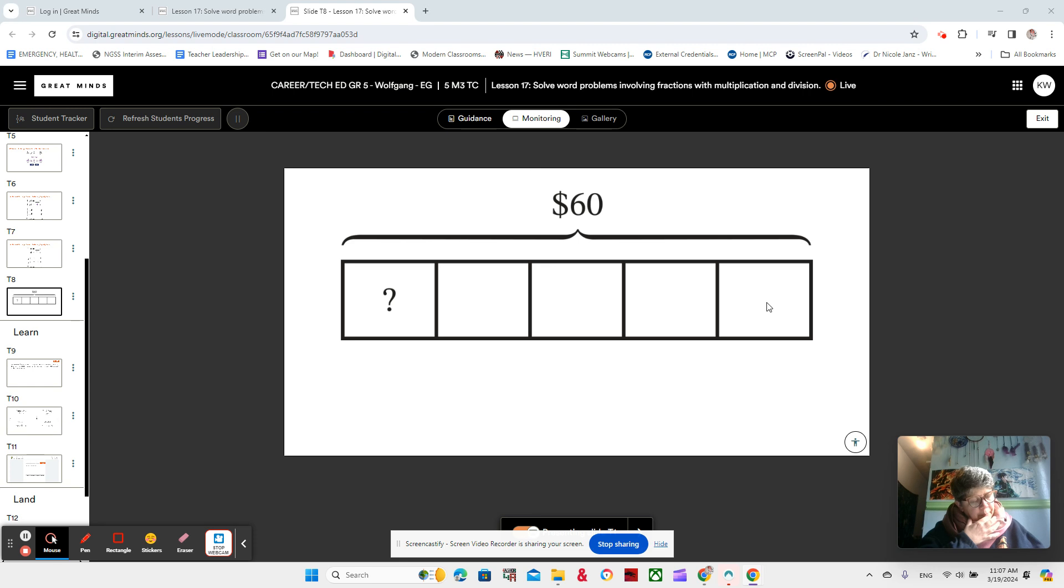Think about an expression that you could write for this tape diagram. Somewhere on a piece of paper, in the beginning of your notes for Lesson 17, write down an expression. Think about what you've been learning in the last couple of lessons.